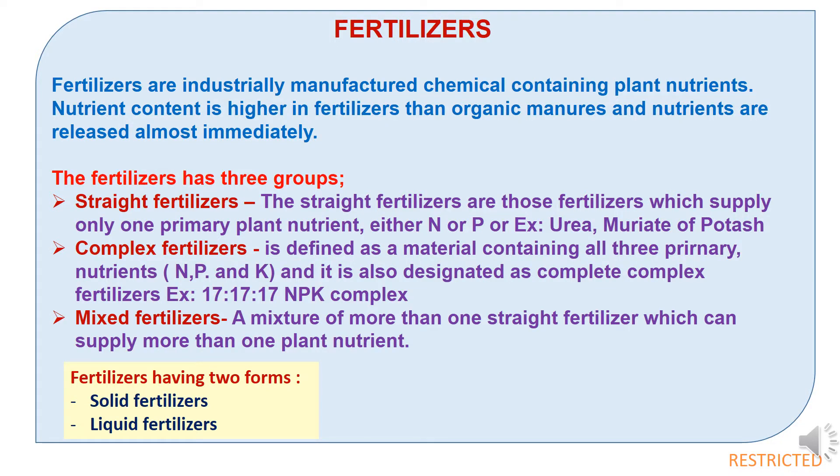Fertilizers are industrially manufactured chemicals containing plant nutrients. Nutrient content is higher in fertilizers compared to organic manures, and nutrients are released almost immediately. There are three types of fertilizers.